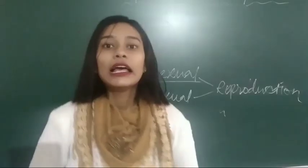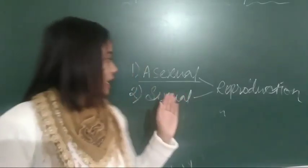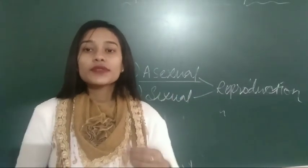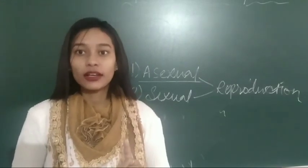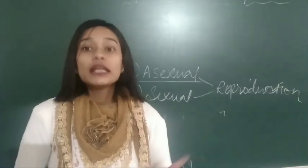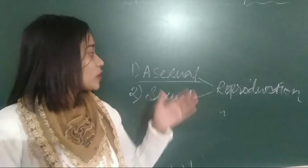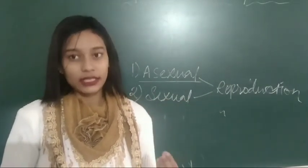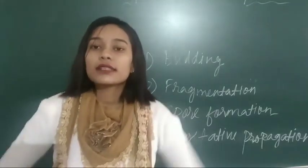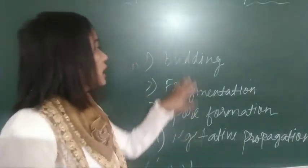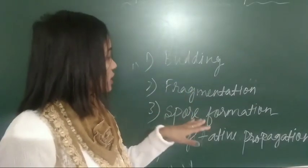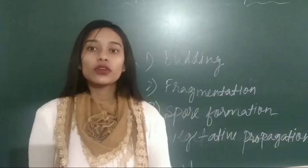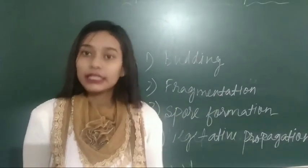Now we will discuss about asexual reproduction. Asexual reproduction is a mode of reproduction in which offspring are produced from a single parent without any involvement of seed. And offspring produced through asexual reproduction are identical to the parent. There are some common methods of asexual reproduction: budding, fragmentation, spore formation and vegetative propagation. Here is a short video which will help you to understand these topics clearly.